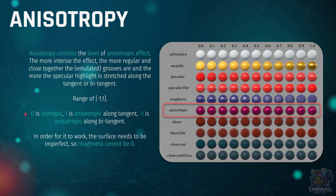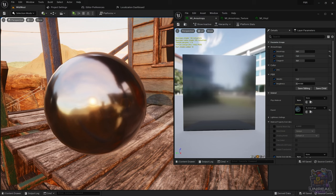In Unreal Engine, zero will be isotropic — no stretching of the specular highlight. One will be anisotropic, stretched along the tangent, and minus one will be anisotropic again but stretched along the bitangent. For this to work, we need to have a roughness not equal to zero, so the surface needs to be a little imperfect. We need those micro-grooves, micro-scratches, or microfibers for this to work. If the surface is a perfect mirror, this will not work because there are no imperfections in the micro surface.